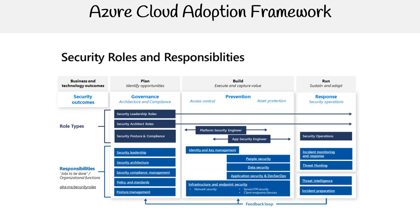Phases of security implementation: Plan identifies security needs. Build implements strategies including access control and asset protection. Run manages ongoing operations including prevention and response. The feedback loop represents a continuous improvement cycle in security operations.